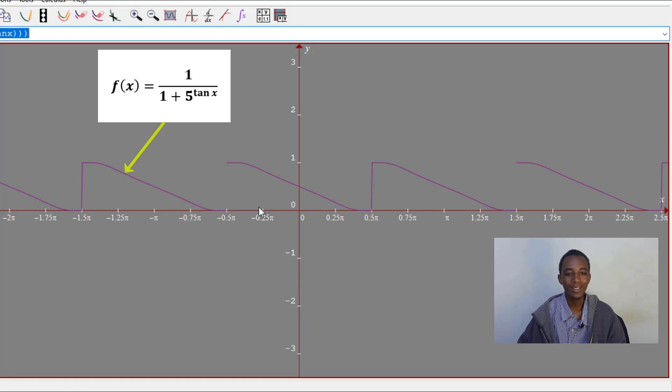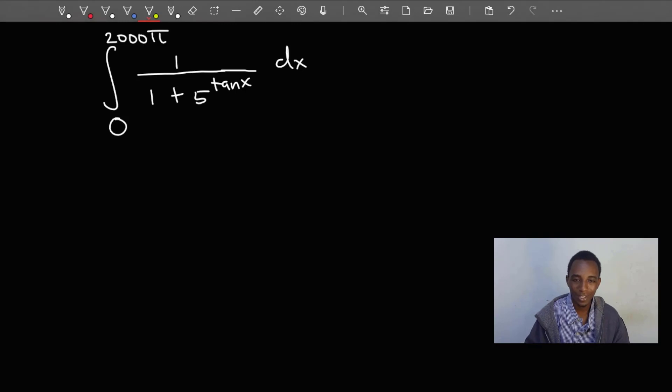The interesting thing about this function here is that it's an odd function, which means that f of x is the same as negative f of negative x.